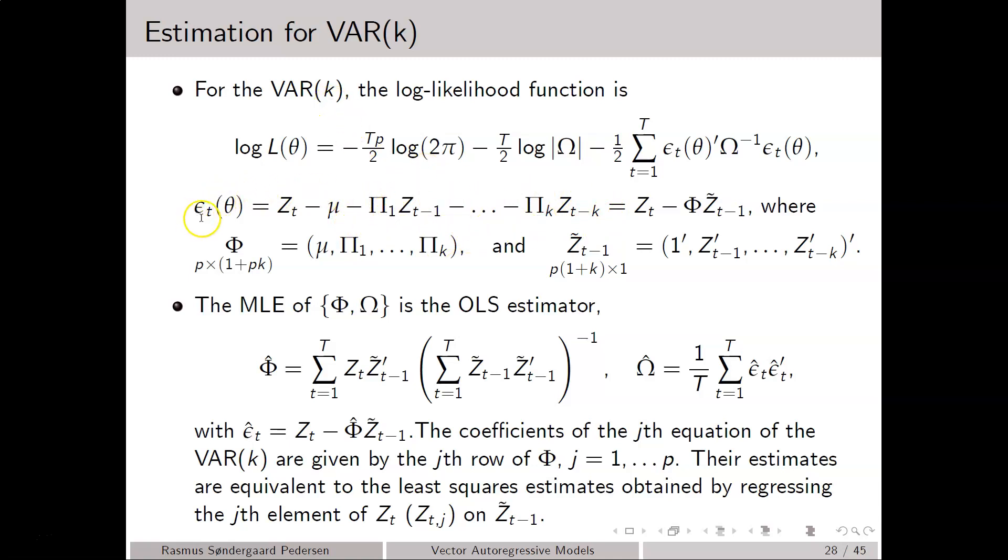We may write Z_T minus phi times Z_{T-1} tilde, where phi is a matrix containing the constant term and all of the autoregressive matrices pi one up to pi k. And where Z_{T-1} tilde stacks all of the regressor variables. So it stacks the constant or a vector of ones and then the lagged Z_T's from order one up to order k.